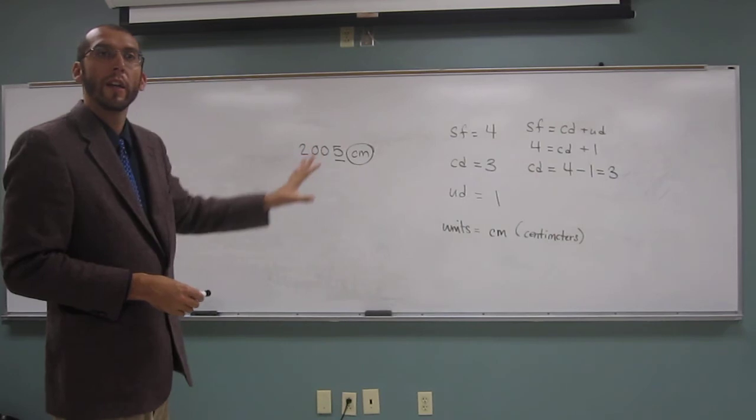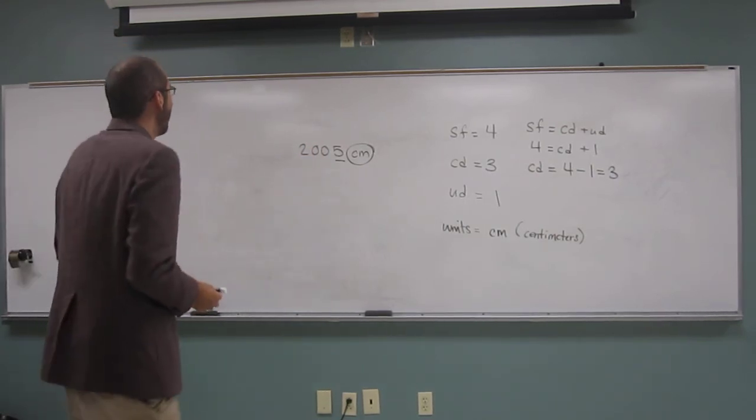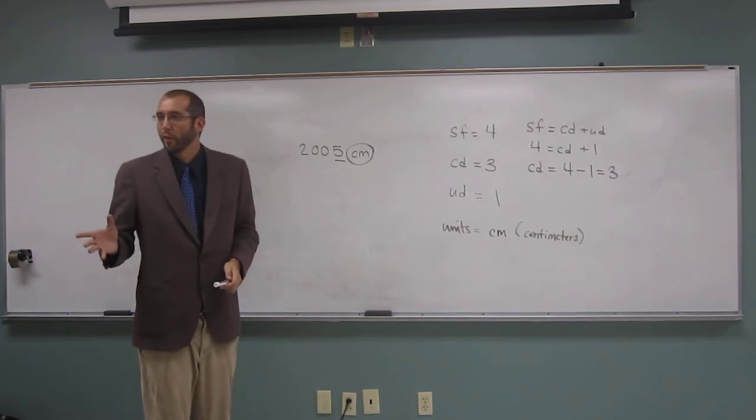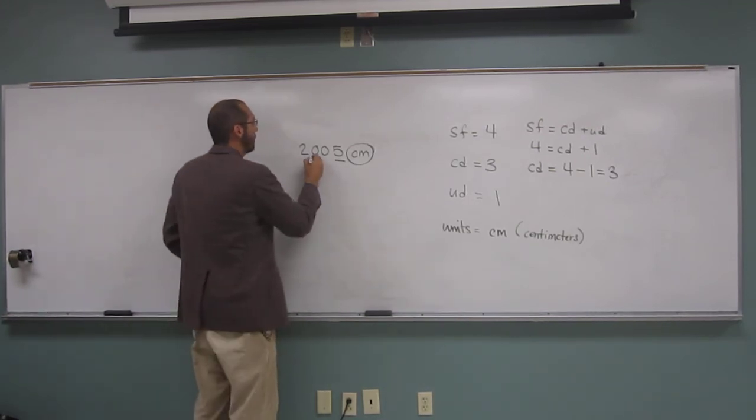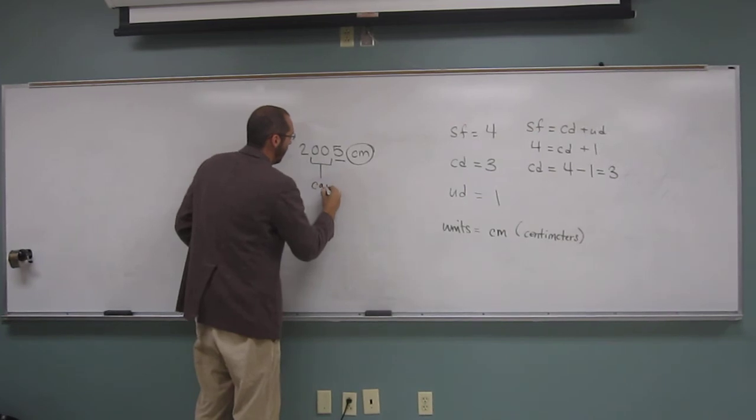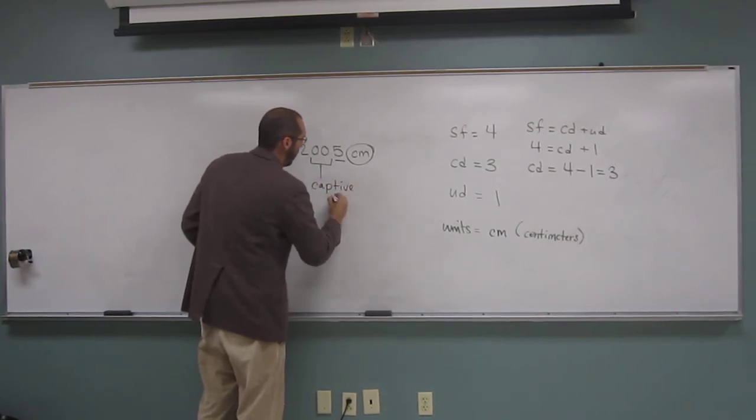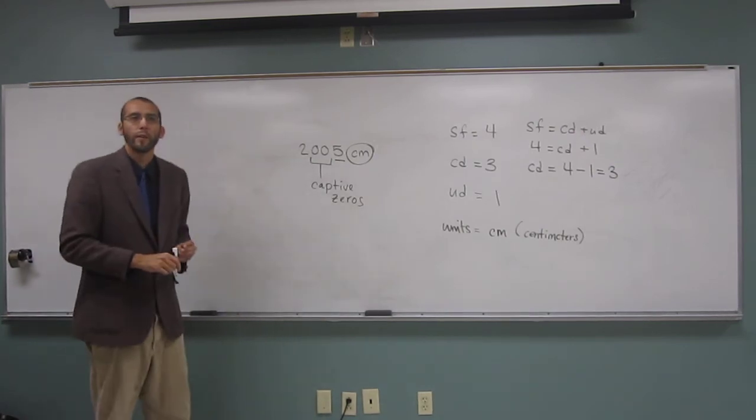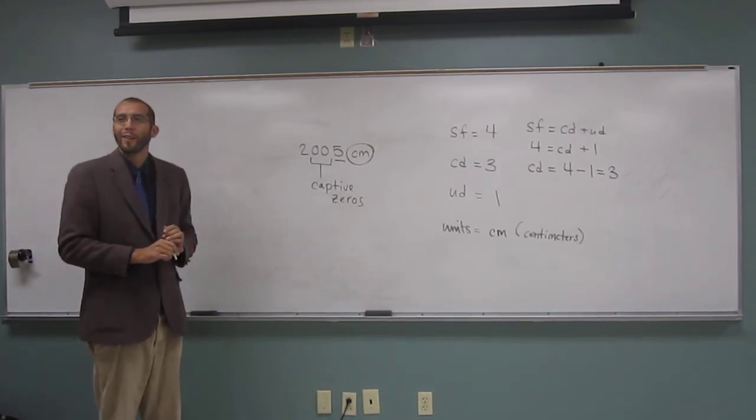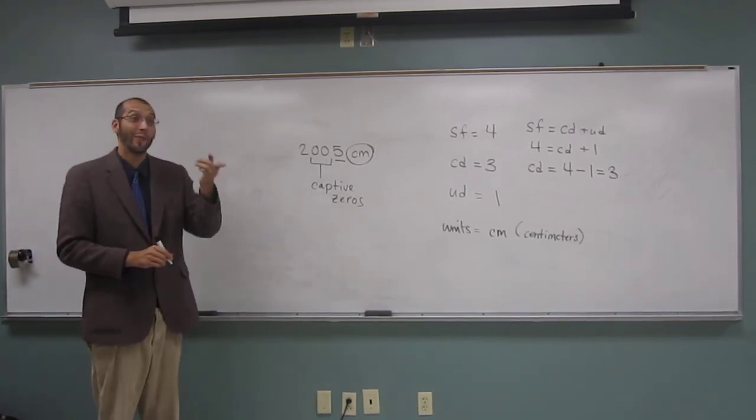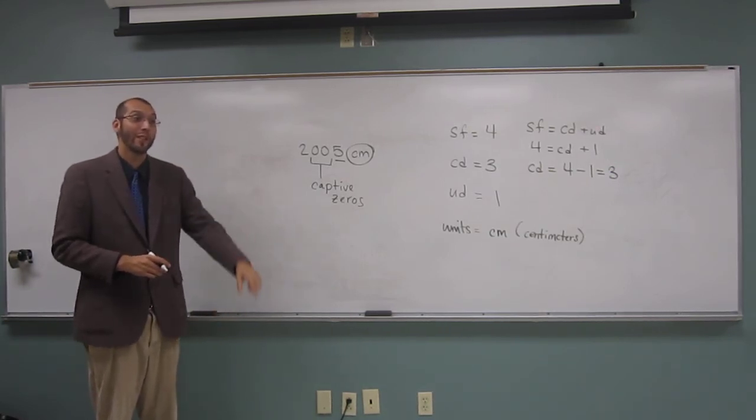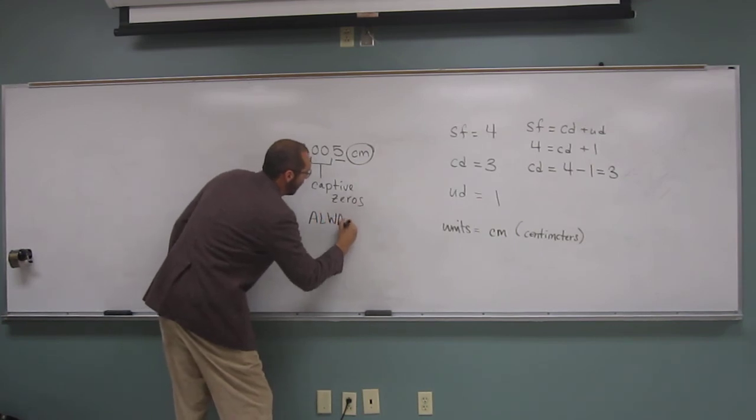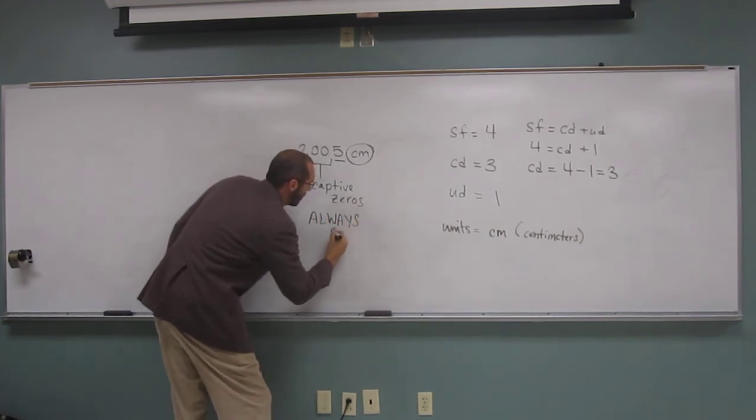Does everybody understand this particular problem? What type of zeroes do we have here? Captive zeroes, right? So captive zeroes, they're always what? Significant. Significant, right? They're always significant, okay? Captive zeroes, always significant.